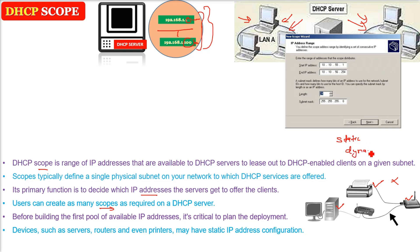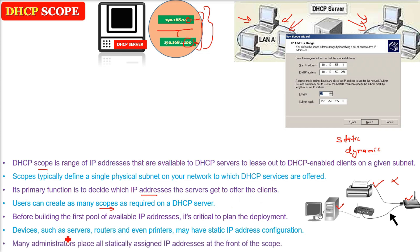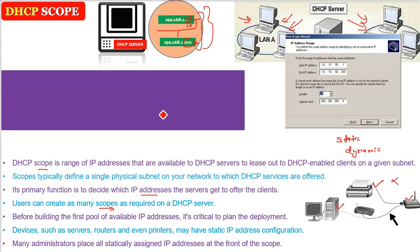Before building the first pool of available IP addresses, it is very important to plan it. You can have a server, a router, a printer — you will not give these a dynamic address every time. You have to give a static IP address and network configuration to devices like servers, routers, and even printers. They are always static. But other computers which are coming and going can be dynamic. So whenever you want to assign to systems that everyone uses and you don't want the IP address to change, static IP addressing can be employed.